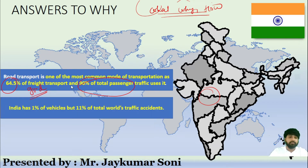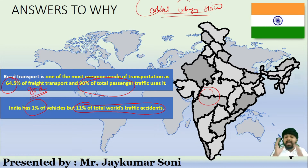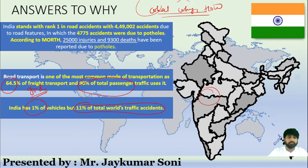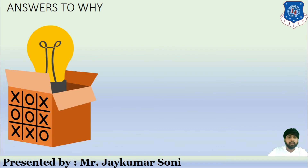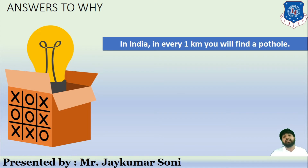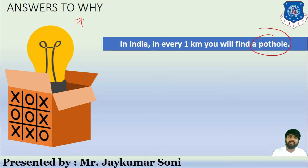India has only 1% of the world's vehicles, yet accounts for 11% of total traffic accidents — a huge disparity. India currently stands first in road accidents, with 4,49,002 accidents recorded due to road conditions, of which 4,775 accidents were due to potholes alone. According to the Ministry of Road Transport and Highways (MoRTH), 25,000 injuries and 9,300 deaths have been reported due to potholes.